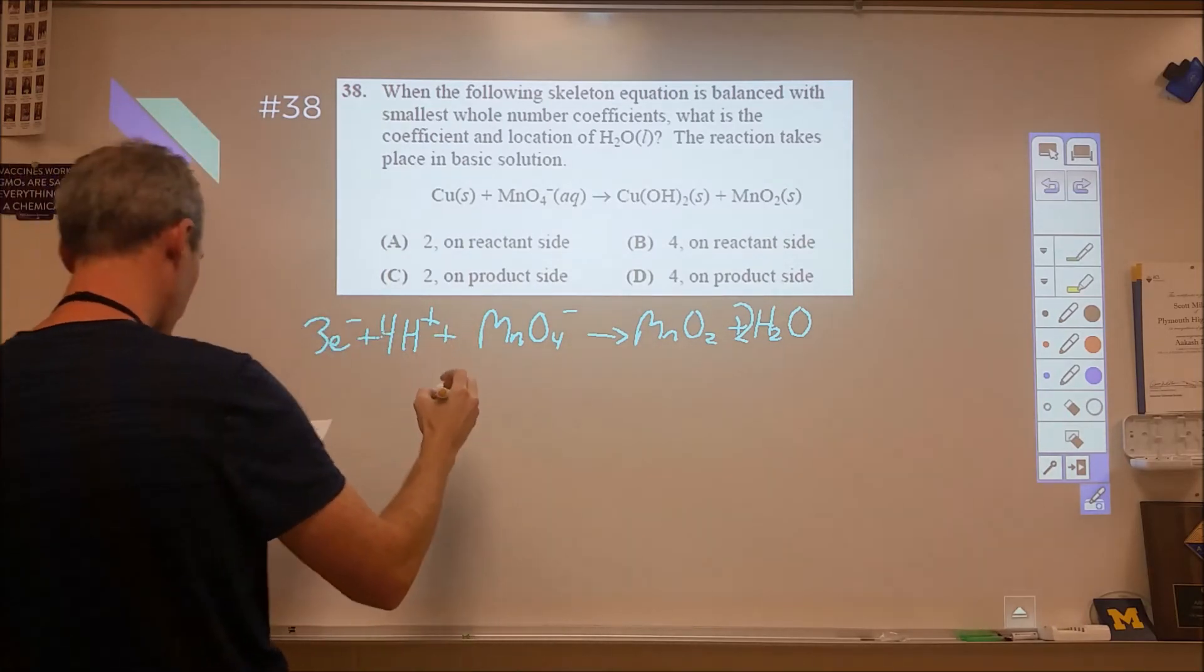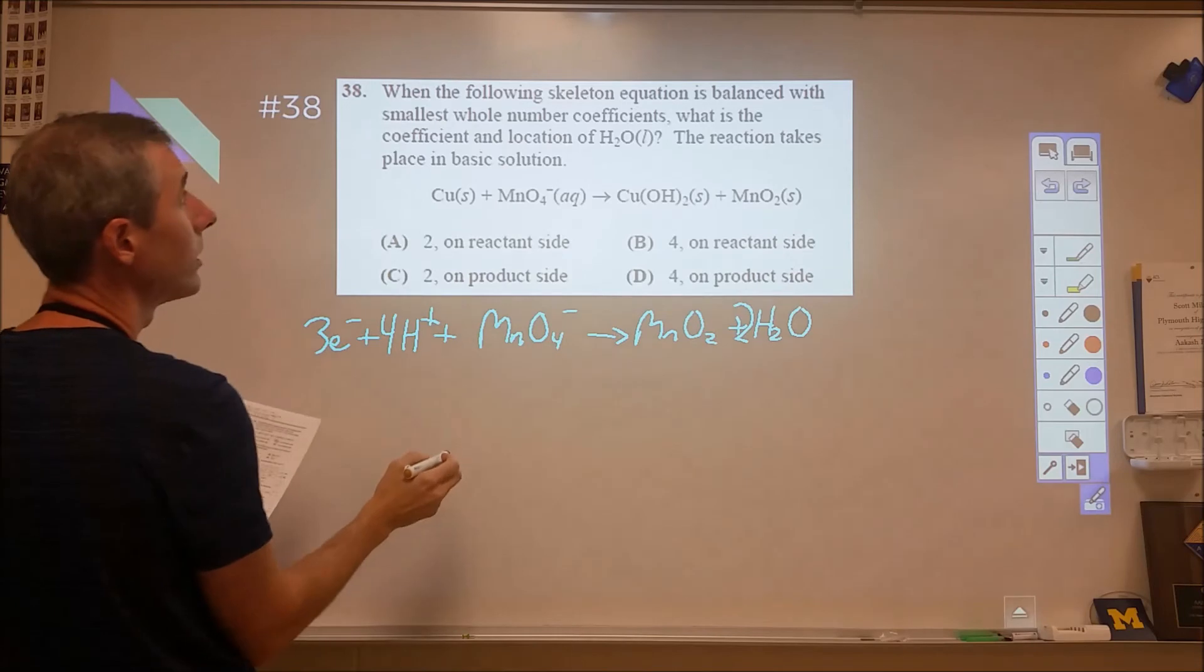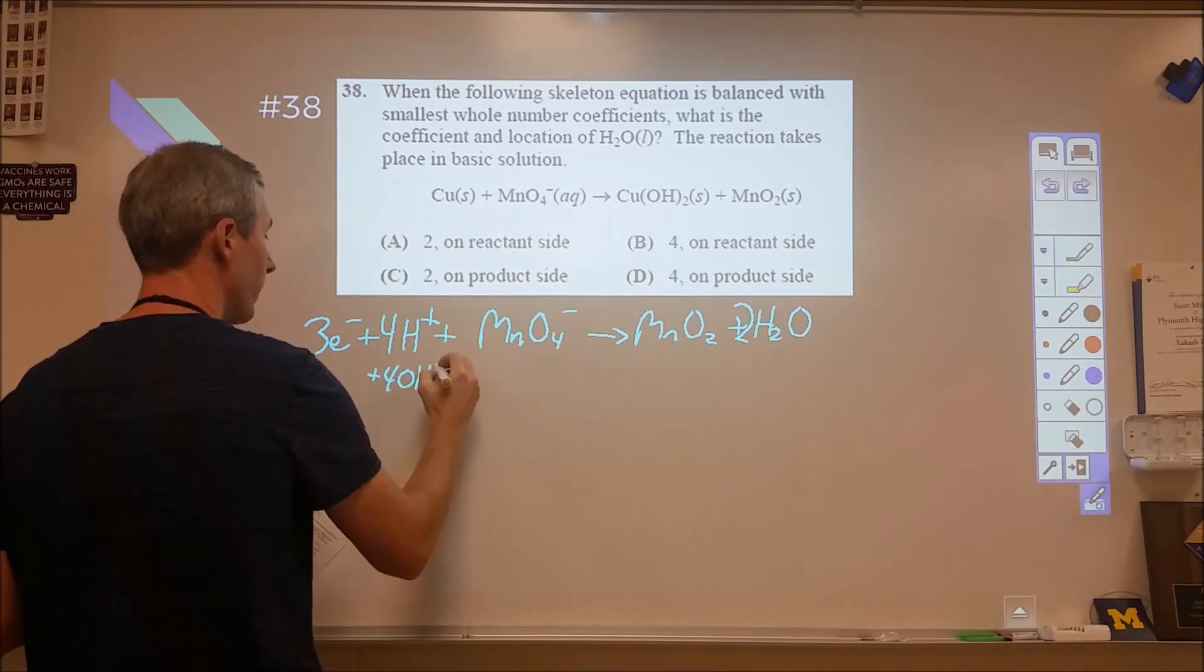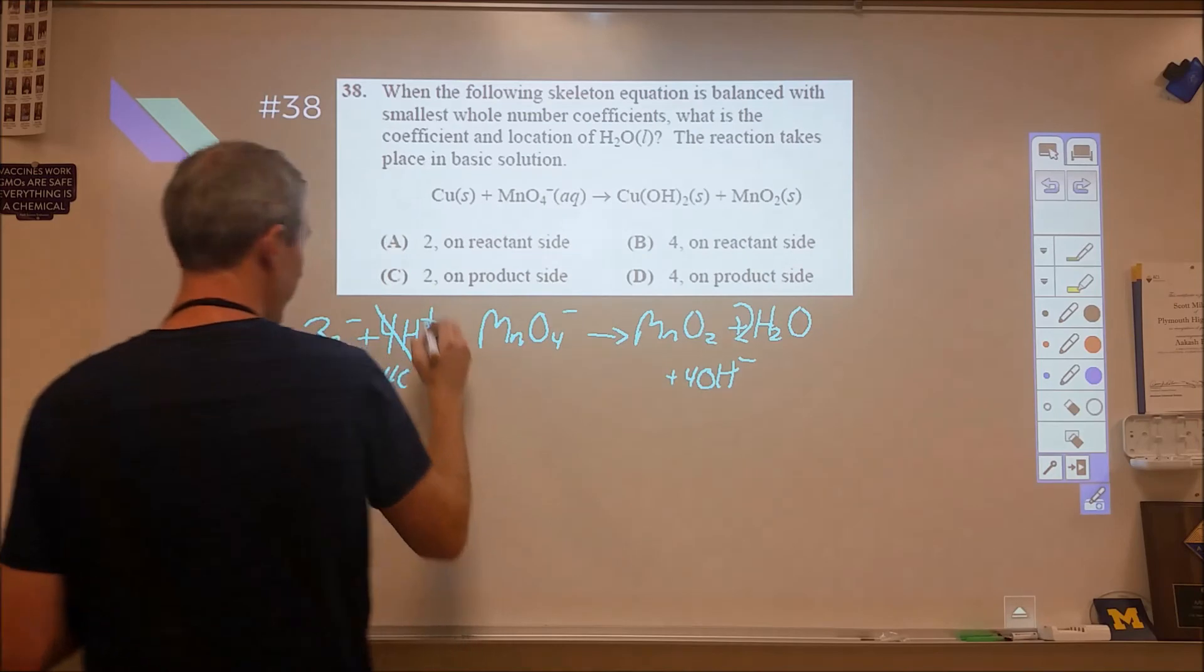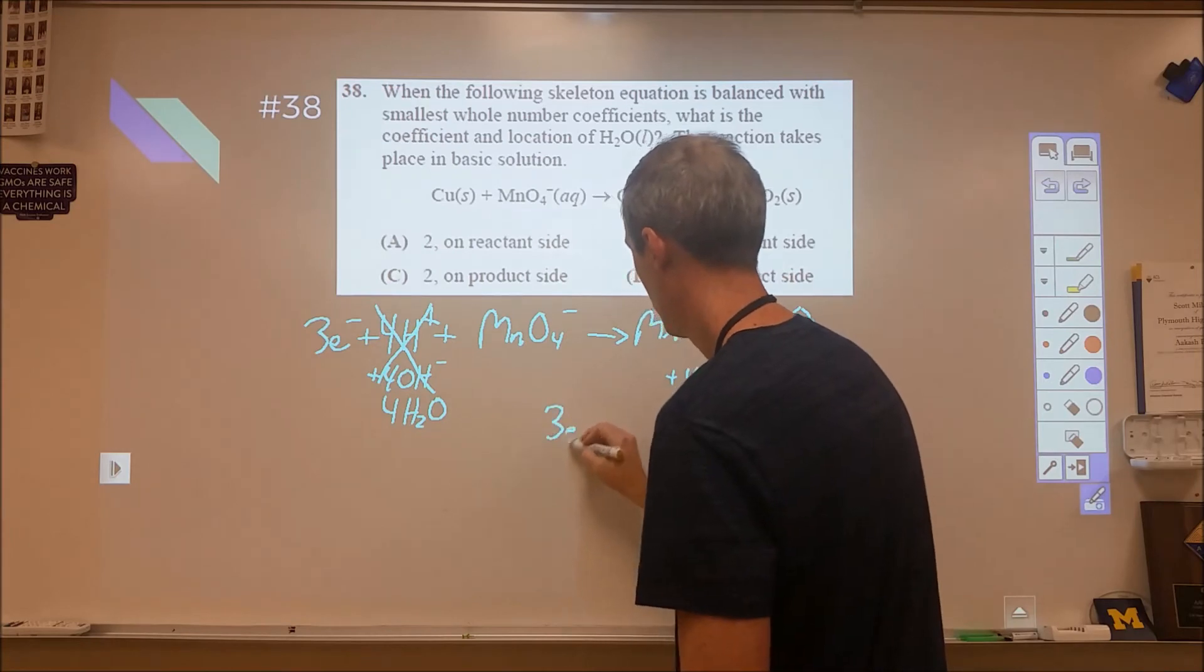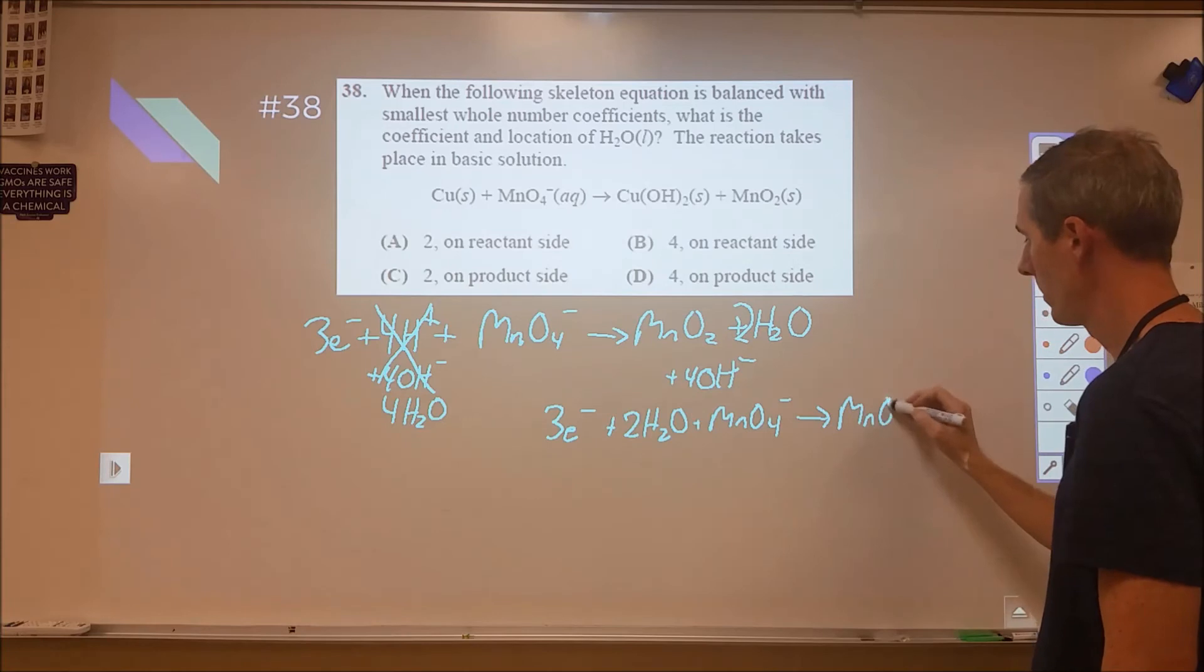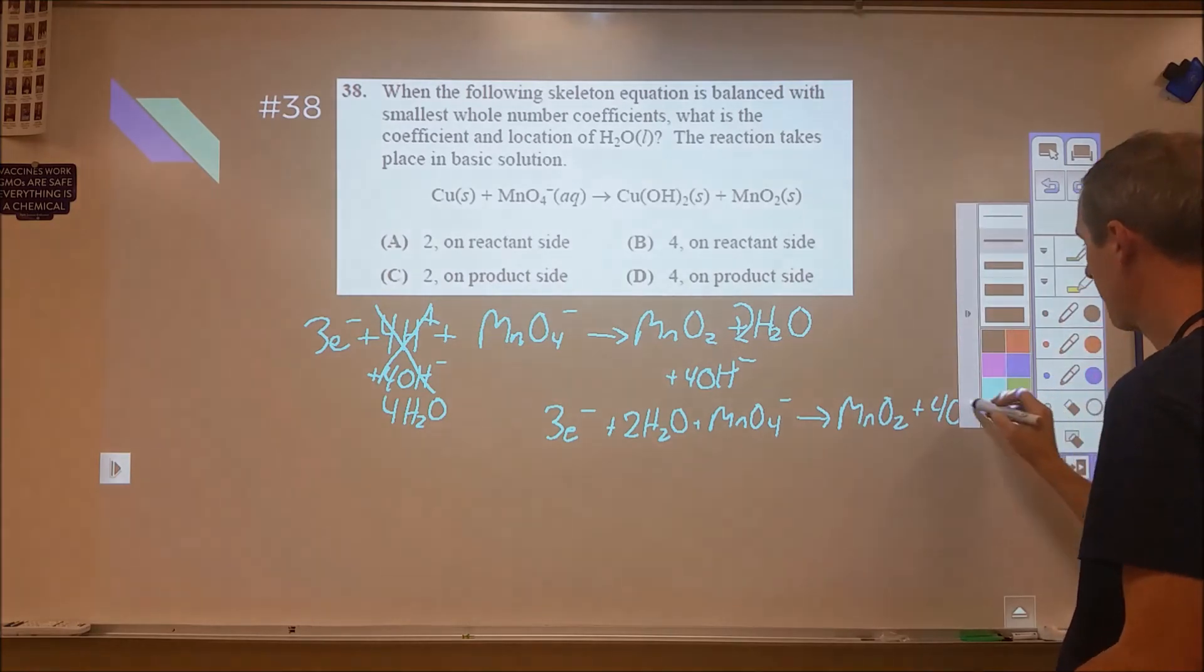And our second reaction, we are looking at... I'm sorry, we're not in acidic conditions, we're in basic conditions. So, in order to balance it in basic conditions, we then need to neutralize this with hydroxides. So, four hydroxides on each side, we'll keep these equivalent. Then that will turn these into four waters. And we can rewrite our balanced equation. That's three electrons plus two waters, plus the permanganate, yields MnO2, and we cancel those out, and four hydroxides.